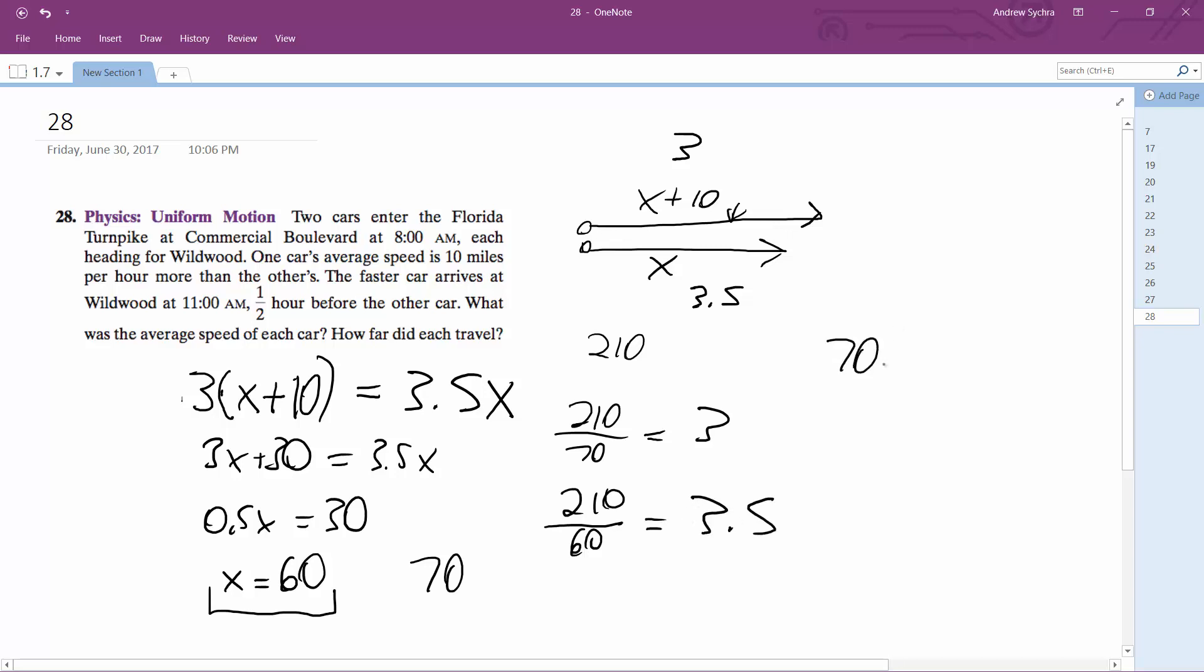So 70 miles per hour, faster car, 60 miles per hour, slower, and they traveled 210 miles. That's it.